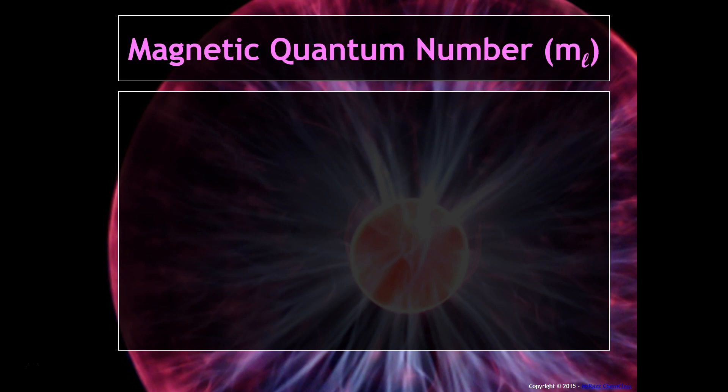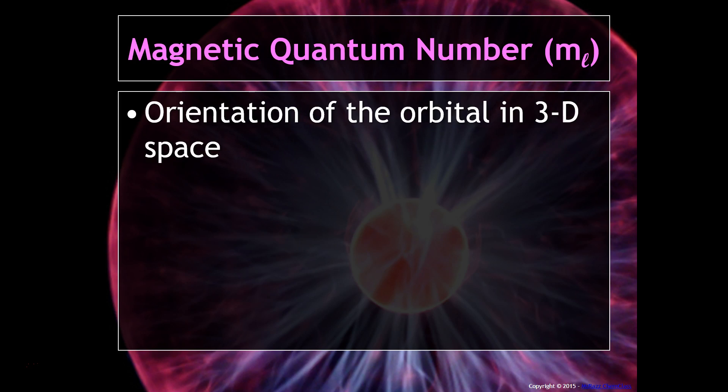Next up is the magnetic quantum number, or M sub L. This is the orientation of the orbital in three-dimensional space. So this is your atomic orbital representation. Notice it is dependent on L, and that makes sense because, for example, we know that S only has one orientation, and P has a total of 3, and D has 5, and F has 7.